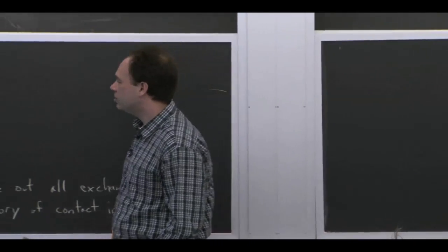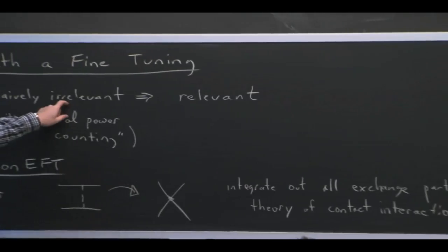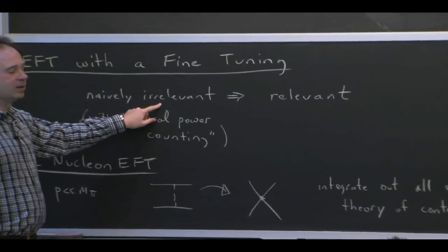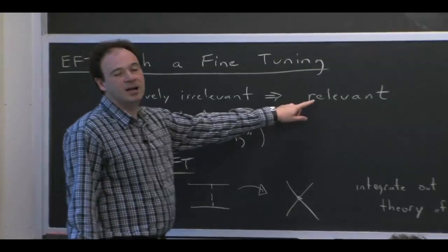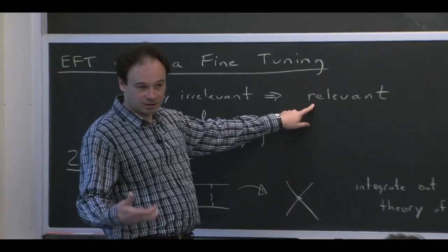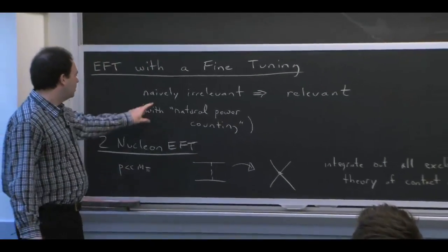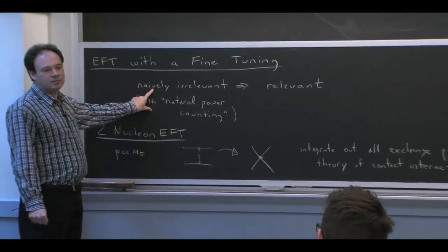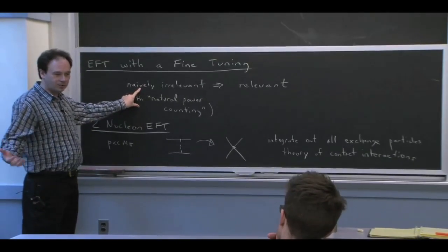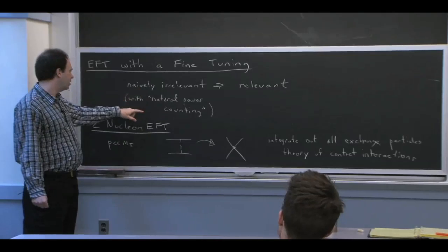So what you could mean by a fine tuning is that you have something that's irrelevant. You look at the operator, you think it's irrelevant, but it's not. It's relevant, something that you should include even at lowest order in your power counting. But saying something is irrelevant means that you have a power counting, that you understand the power counting for the theory, what the correct power counting is.